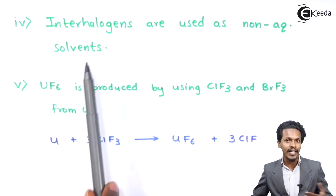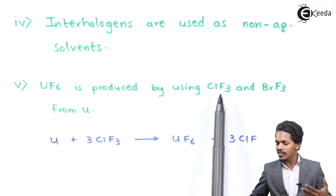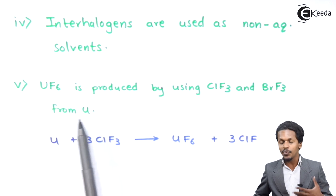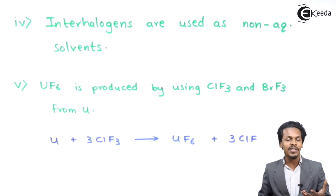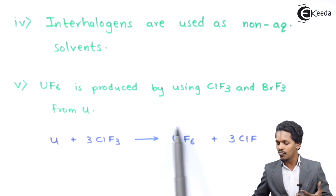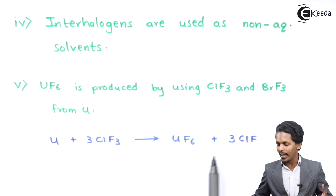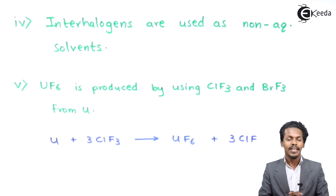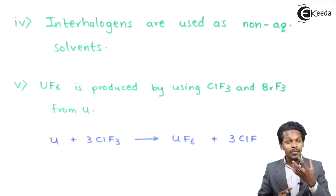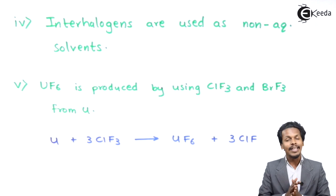UF₆ is produced by using ClF₃ and BrF₃ from uranium, and this process is known as uranium enrichment. Uranium is treated with three moles of ClF₃ to form UF₆ — uranium hexafluoride — along with three moles of ClF. This is how interhalogen compounds are used to purify or enrich radioactive elements.